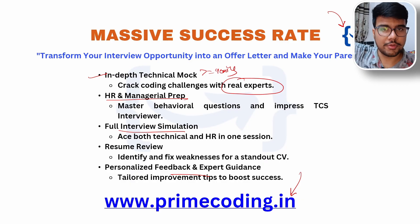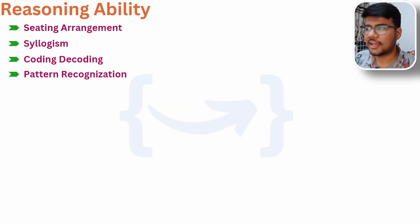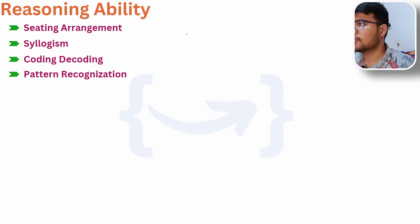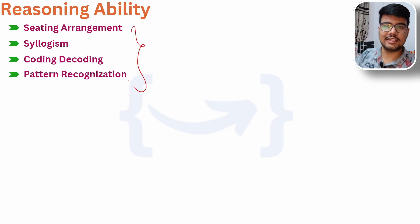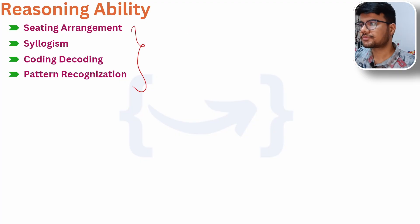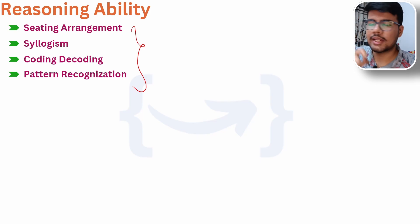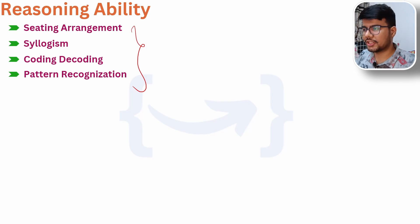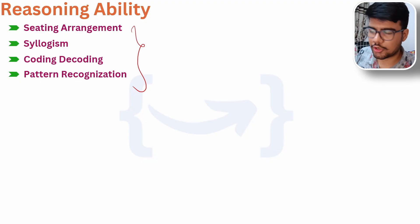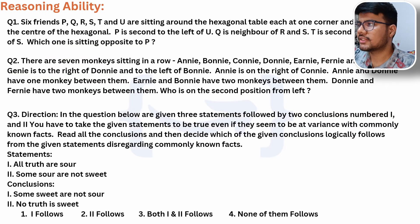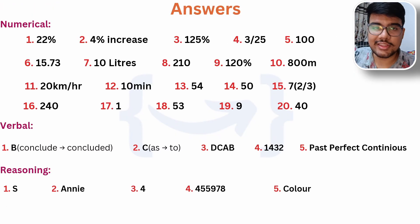For Reasoning Ability, we found four important topics that you should prepare: sitting arrangement, syllogism, coding and decoding, and pattern recognition. These are the most important topics and questions are attached with their answers.